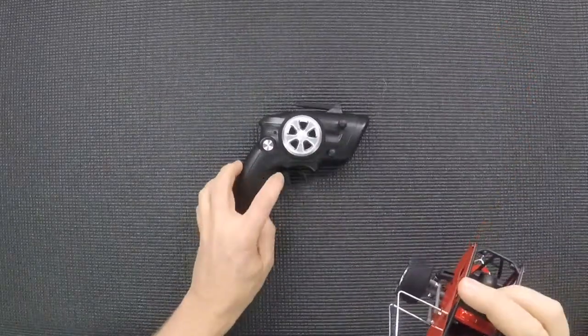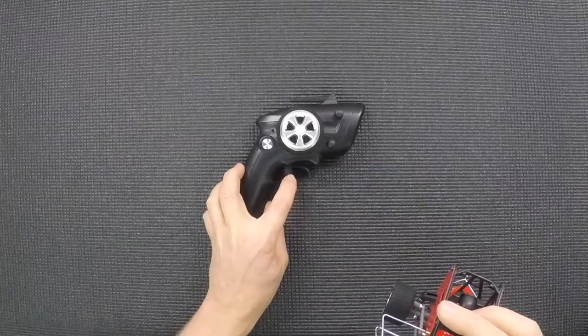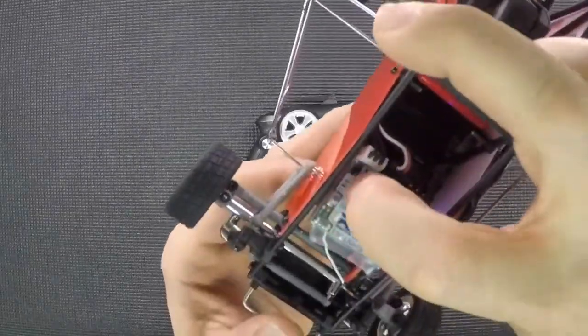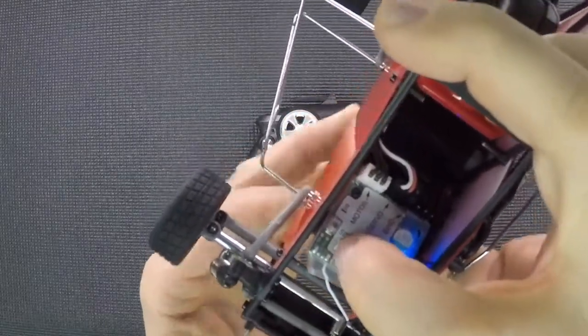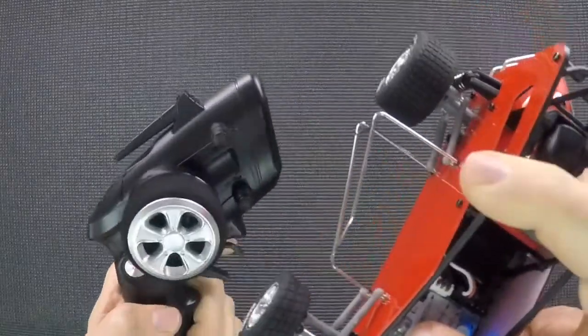Next thing, take the transmitter. Make sure the throttle of the trigger is in the neutral position. Press that set button one more time and you'll see it blink one time. That means it's in the neutral position.